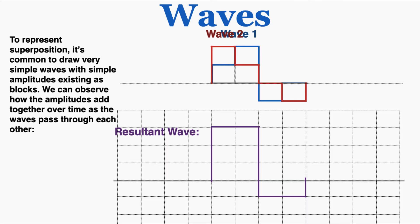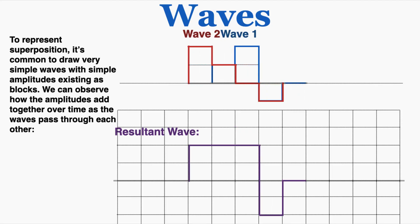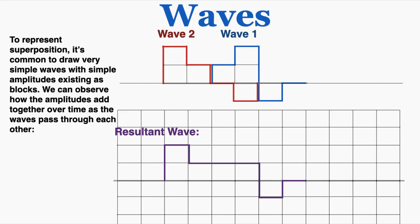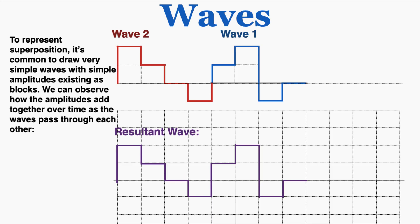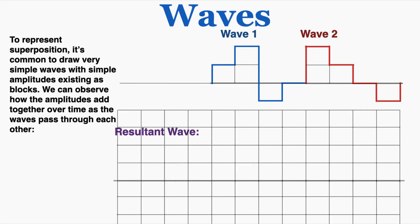Wave 2 continues to move through wave 1, and we can observe how the sum of their amplitudes evolves as it begins to leave wave 1. Once wave 2 is completely out, it just continues to move as if the superposition had never happened. The wave doesn't carry any memory or impact from the superposition — it just continues to move on.